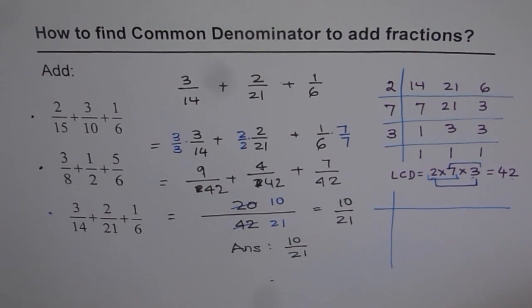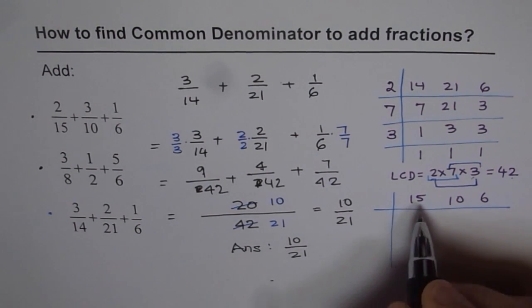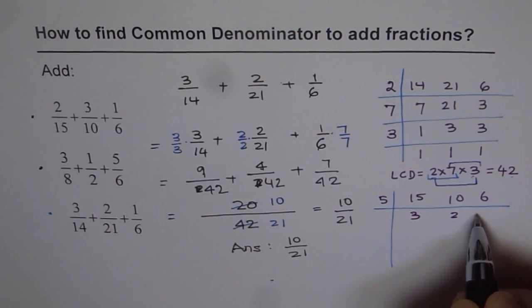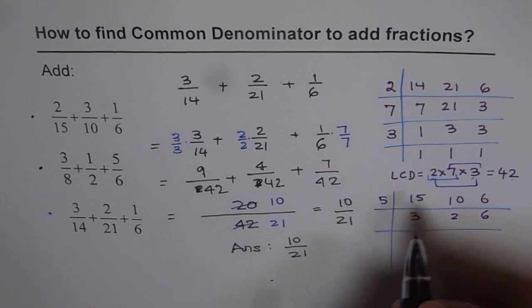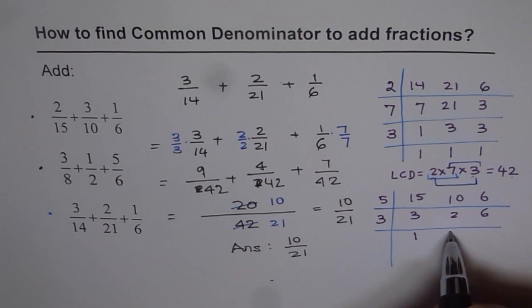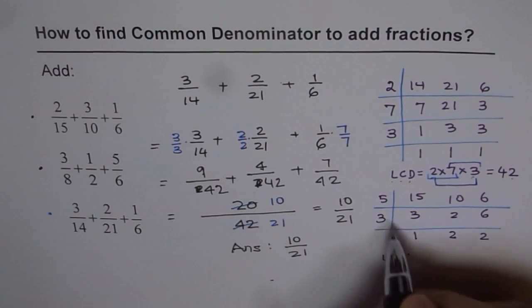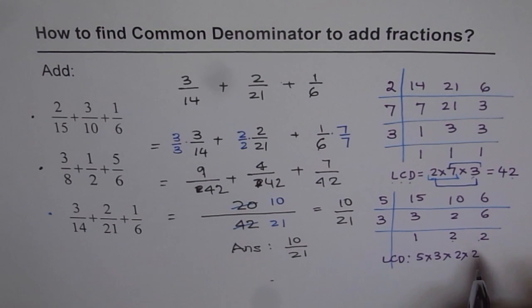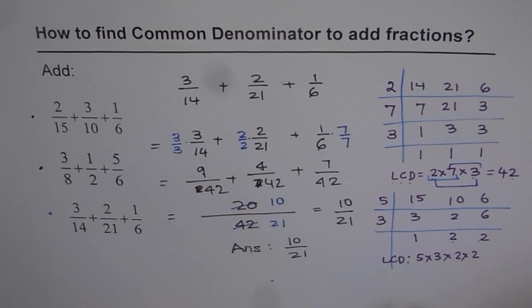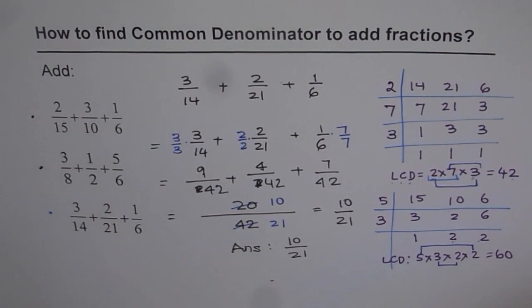Write the numbers 15, 10, 6 and find a number that can divide at least two of them. The number is 5 — 5 times 3 is 15, 5 times 2 is 10, but 5 cannot divide 6, so write 6 as such. Then do repeated division: divide by 3 — 3 times 1 is 3, 3 cannot divide 2 so bring it down, and 3 times 2 is 6. The LCM is 5 times 3 times 2 times 2. Multiply: 5 times 2 is 10, and 3 times 2 is 6, so 10 times 6 equals 60. Now make all denominators 60 and add.